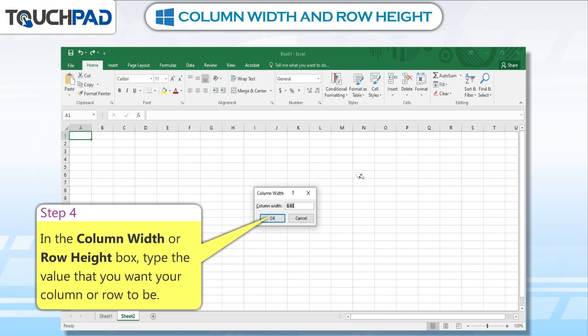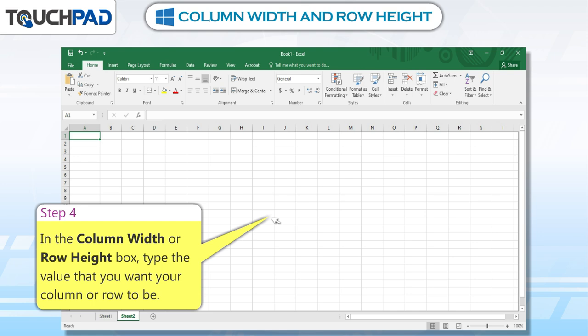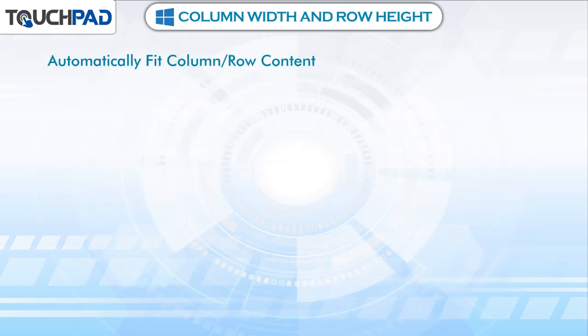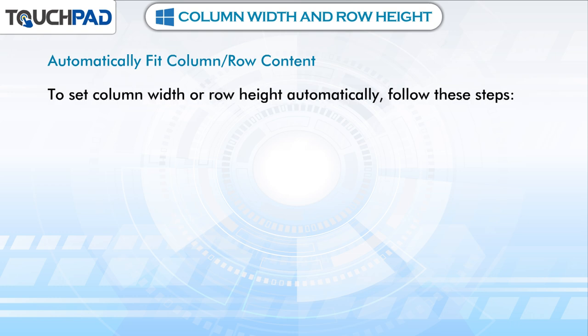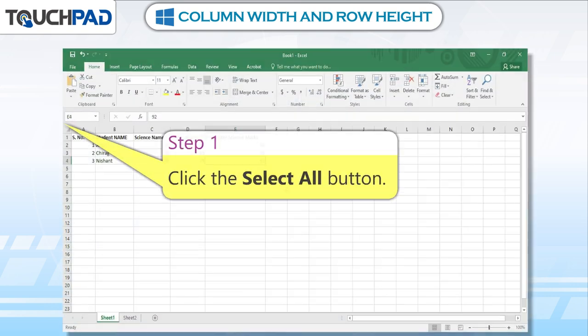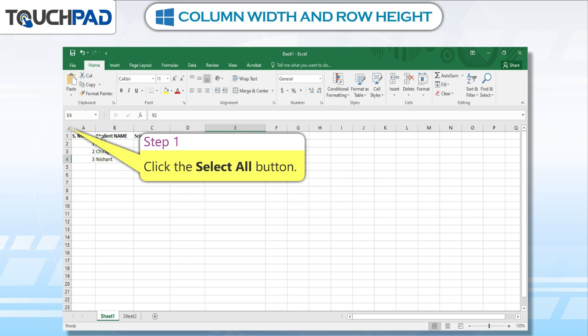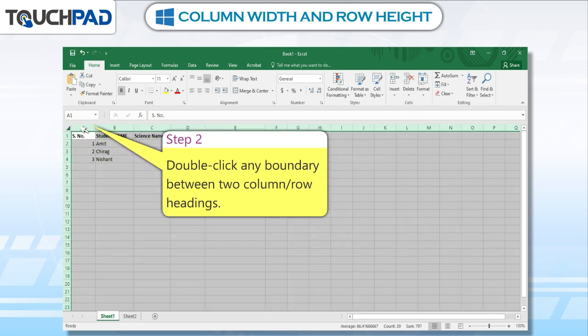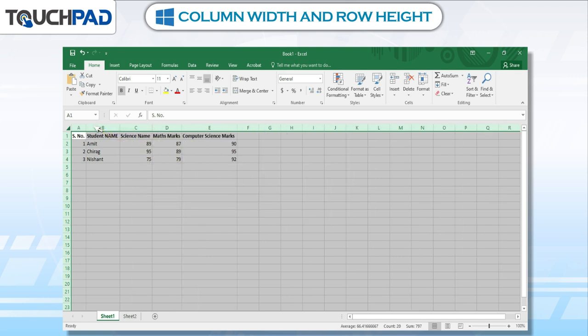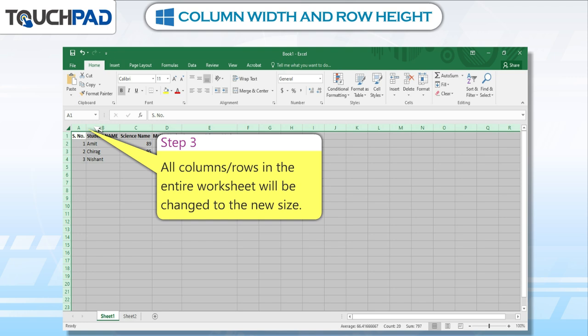Step 4: In the Column Width or Row Height box, type the value that you want your column or row to be. Step 5 — Automatically Fit Column / Row Content. To set column width or row height automatically, follow these steps. Step 1: Click the Select All button. Step 2: Double-click any boundary between two column or row headings. Step 3: All columns or rows in the entire worksheet will be changed to the new size.